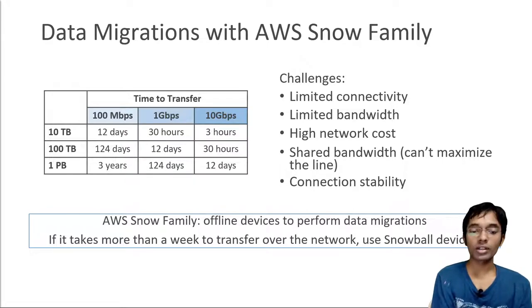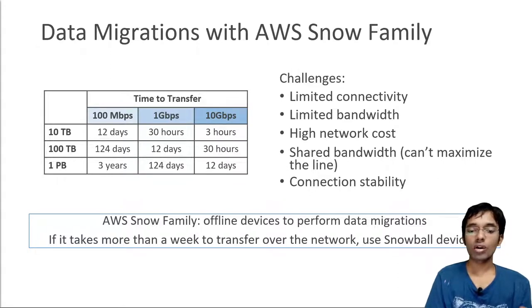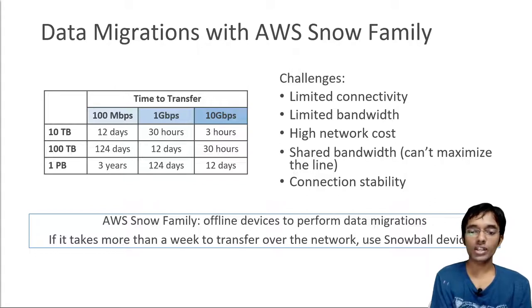On top of slow transfer times, you may have limited connectivity and limited bandwidth. It's not free to use a network, and bandwidth may be shared — downloading 10 terabytes could block your entire office network. The connection may not be stable, requiring retries. All these reasons make a case for the Snow Family, which are offline devices that allow you to perform data migration via physical devices sent by post.